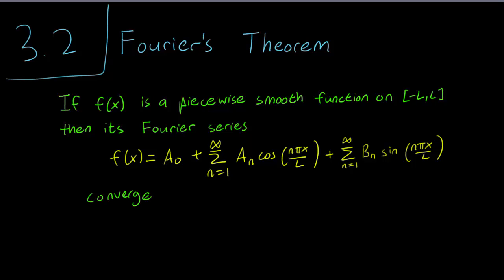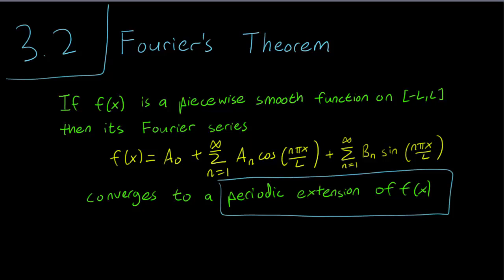So again, the Fourier series is a way to write down a function in terms of sine and cosine functions of a particular form. Now, we have to be precise as to what it means to have a Fourier series converge to our function. So here's the thing, our function f(x) is defined from minus L to L, but obviously our cosine and sine functions are periodic and defined across the whole real line. And in fact, we say that the Fourier series converges to a periodic extension of f(x). Now, let us discuss a little bit what that means.